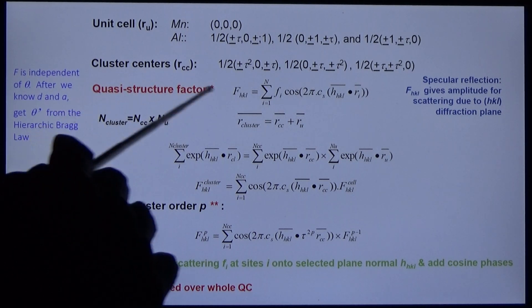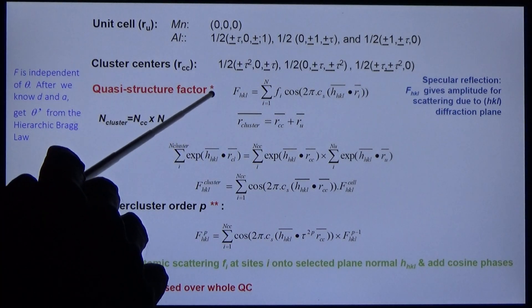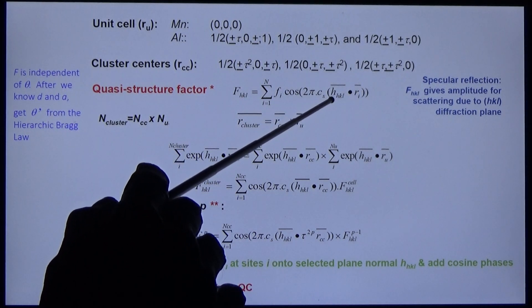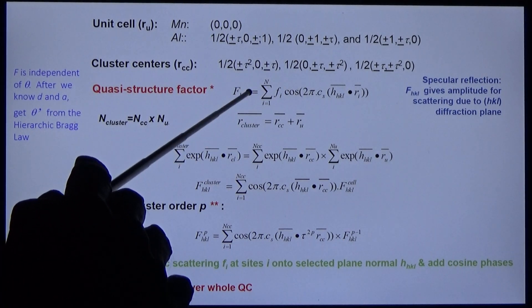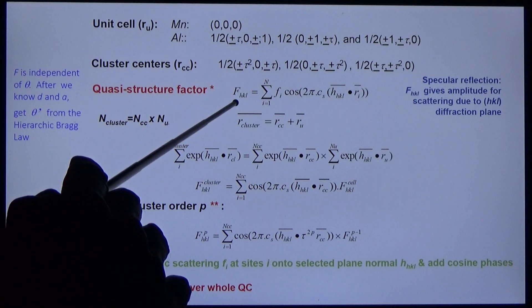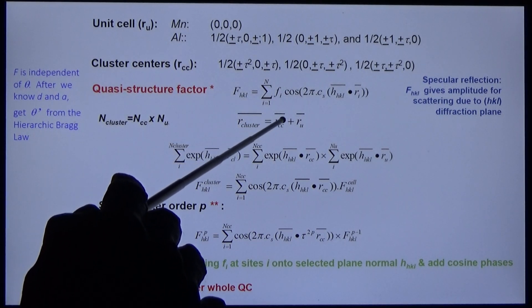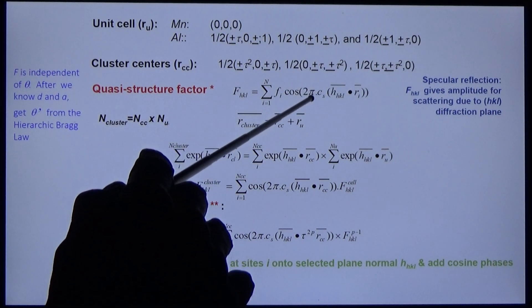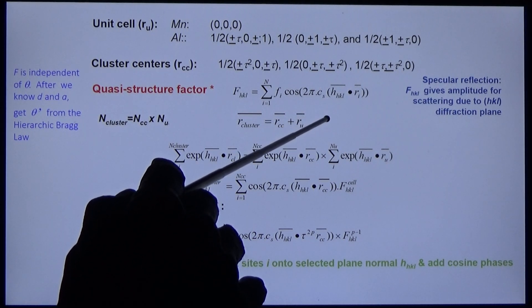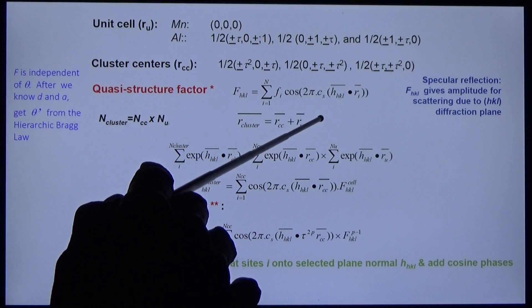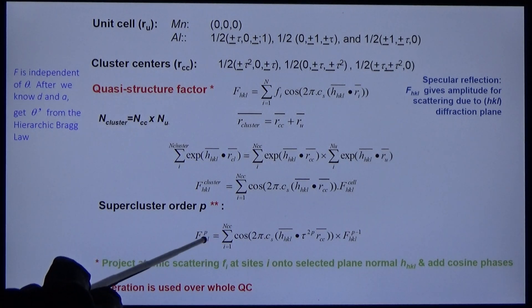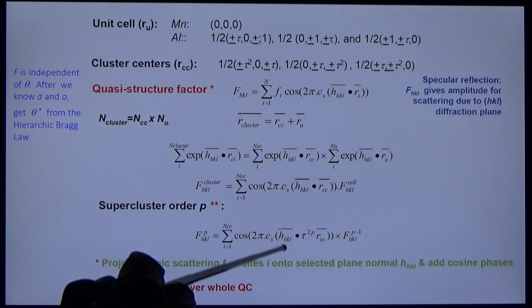The quasi-structure factor is derived from the structure factor in crystals in the following way. In crystals, each atom is projected onto a selected plane normal and phase cosine sum to give the amplitude for the corresponding Bragg beam. In the quasi-crystal, we make two adjustments. First, because we have sharp diffraction but multiple D spacings, we include the coherence factor. Second, because our unit cell is not periodically repeating, we have to sum over the whole crystal, not just the unit cell. And to do this, we need an iterative procedure and the stretching factor.